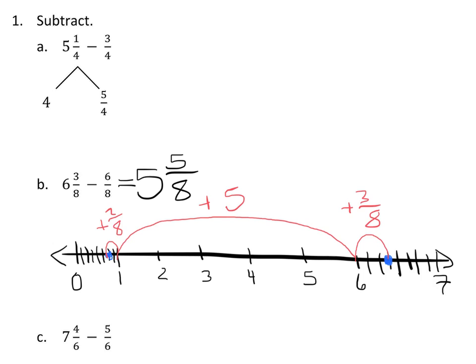Now for A, they used a different strategy. I don't care at this point what strategy you use as long as you show me your work. By now you've looked at lots of strategies. The problem with subtracting five and one-fourth is you can't subtract three-fourths from one-fourth.